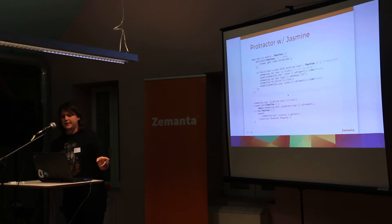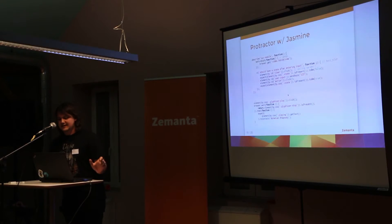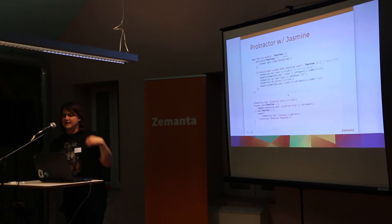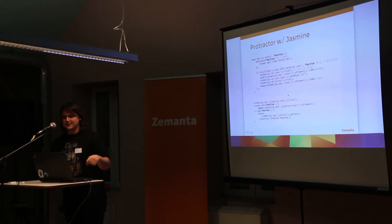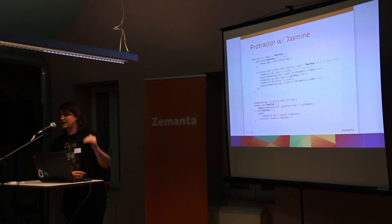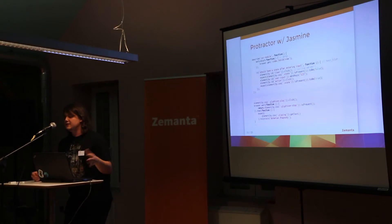We can also do interaction with the browser — we can tell Protractor to wait until an element is present and then run the test. But usually you really don't have to do it, because if there's something going on in the background in an Angular application, it's in the digest cycle. Protractor understands the digest cycle and waits for it — it waits for all background actions to complete and then tests for the value. So usually your tests look like the example above, just stating actions sequentially and not worrying about background jobs, logic, or even promises.